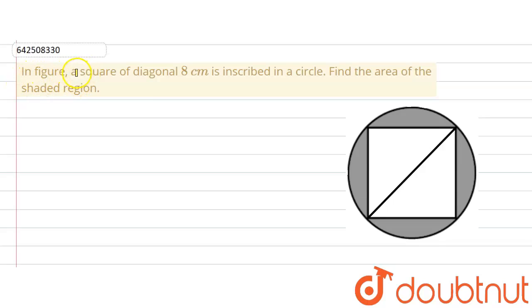The given question says that in the figure, a square of diagonal 8 cm is inscribed in a circle. Find the area of the shaded region.